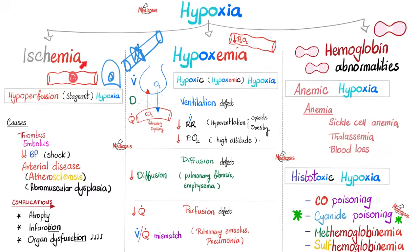What are the complications of ischemia? Atrophy, infarction, organ dysfunction. Do I see these after myocardial infarction? Of course. How about a stroke? Of course.